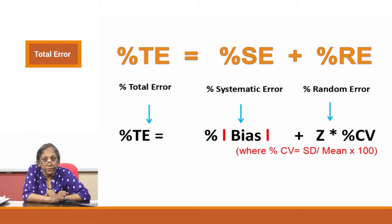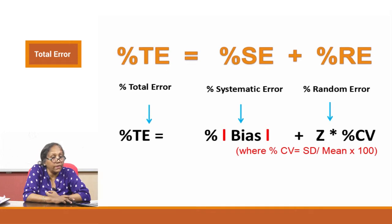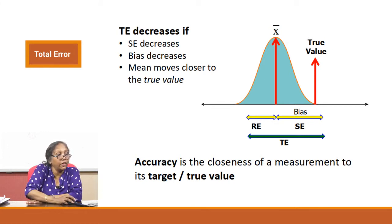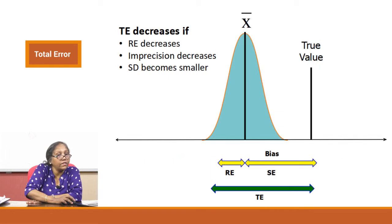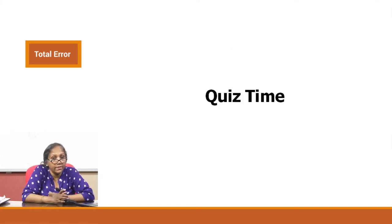There is a reason you need both units and percentages — this will be explained in the next video, where we compare total error against available databases expressed in both units and percentages. Total error decreases if systematic error decreases (bias decreases and the mean moves closer to the true value) or if random error decreases (imprecision decreases and SD becomes smaller). Both are ways to decrease total error.